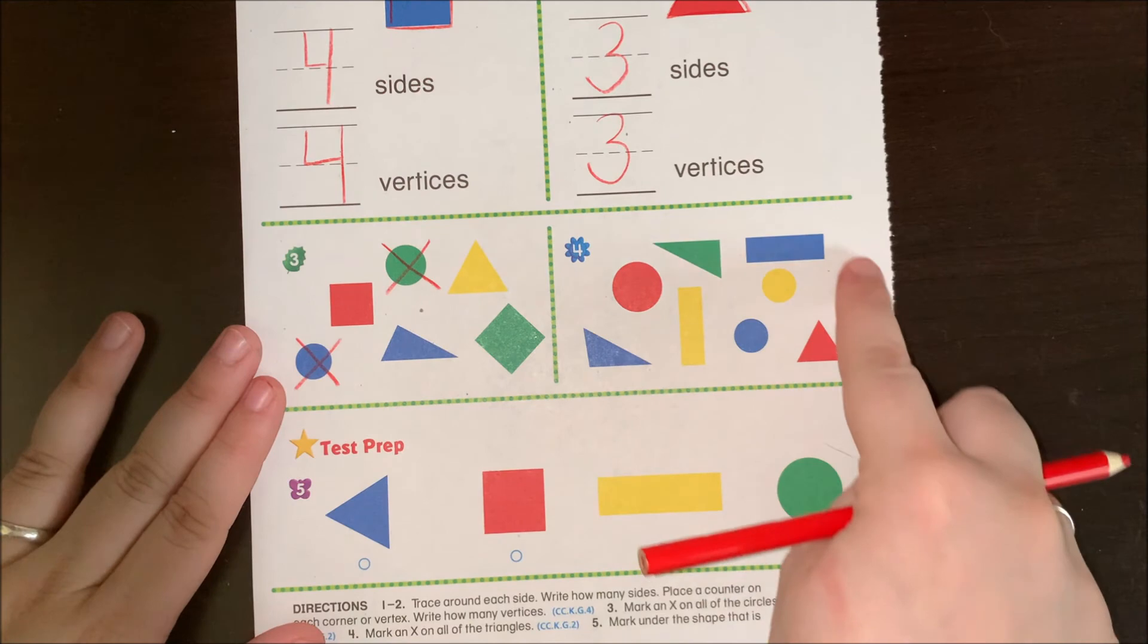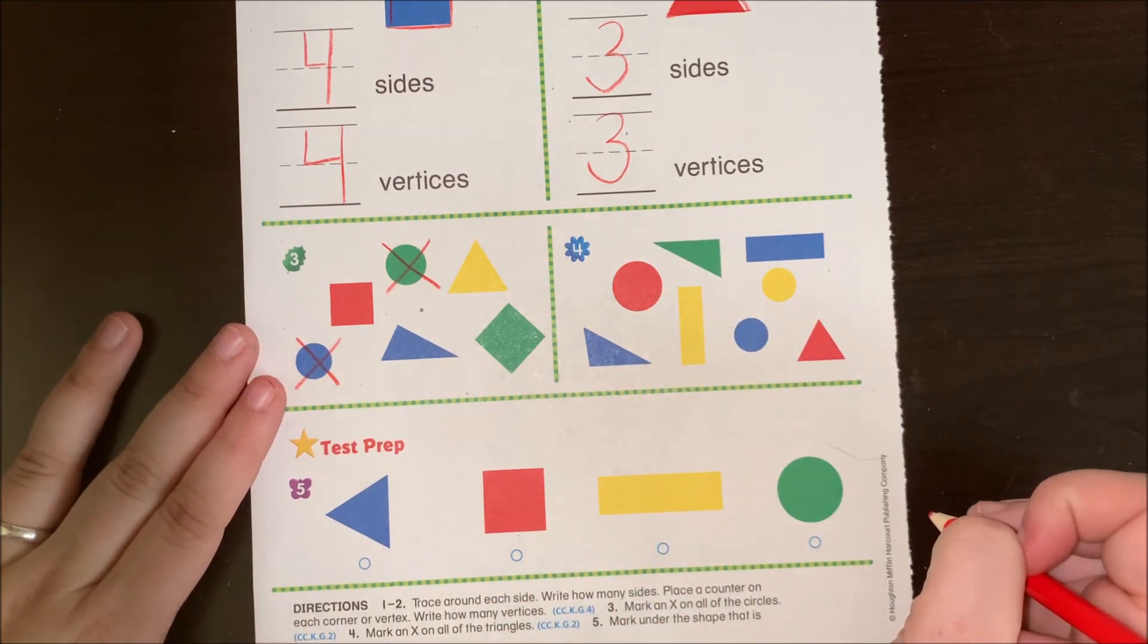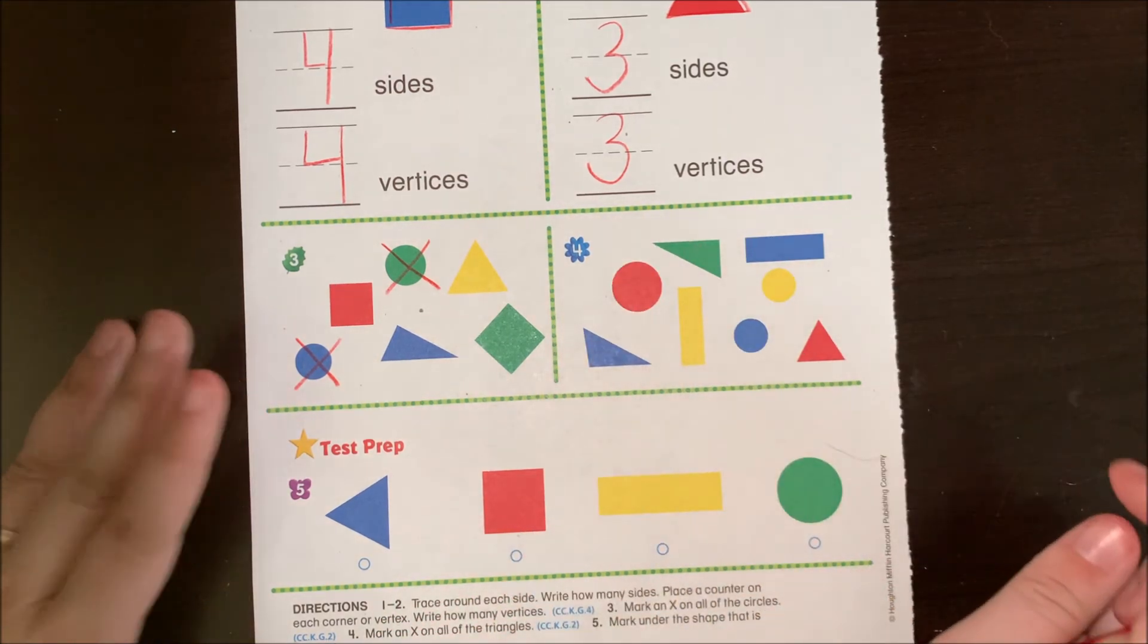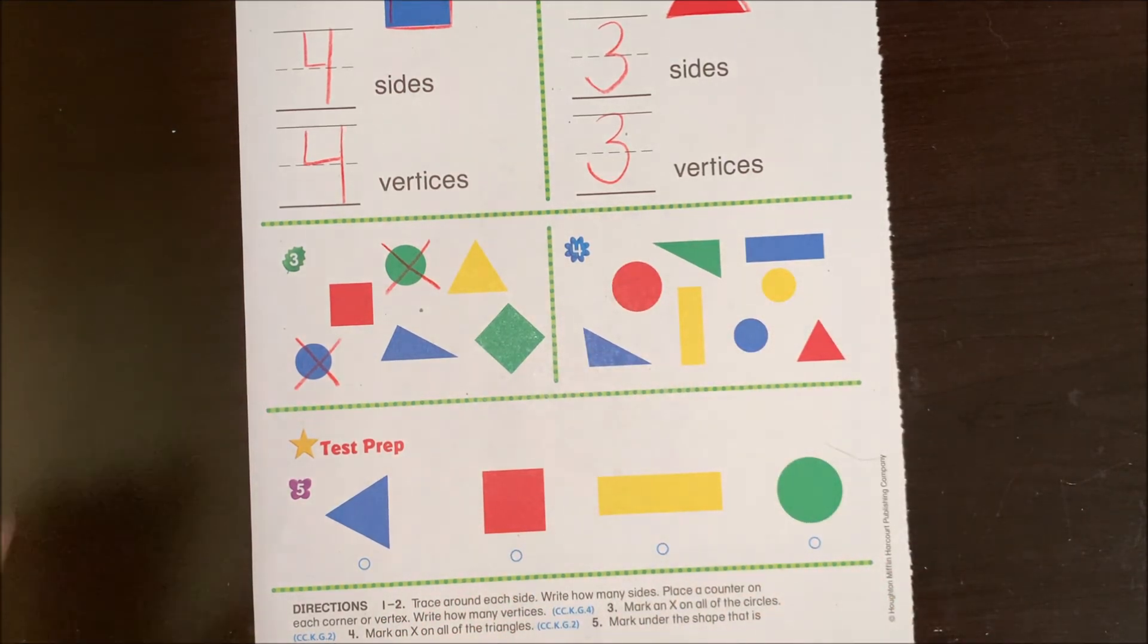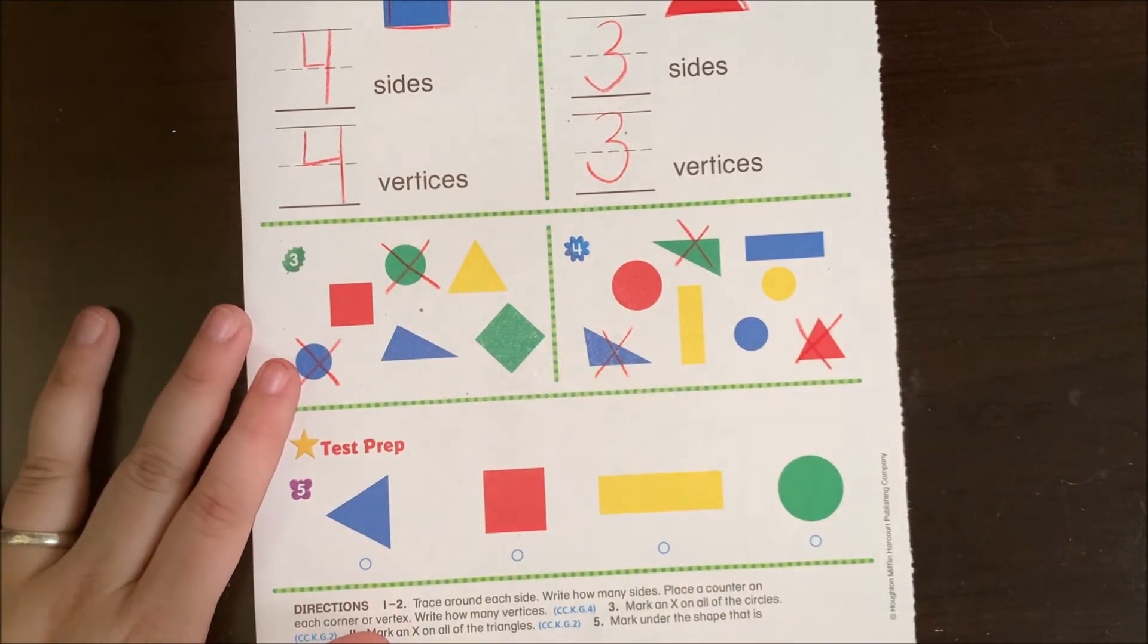And in this section, mark an X in all of the triangles. Go ahead. Just in this part. I see one, two, three triangles.